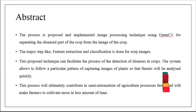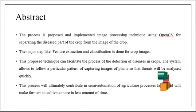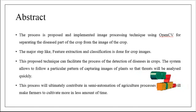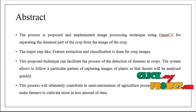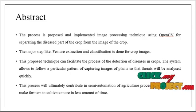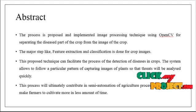We are going to discuss the abstract of the process. The process is proposed and implemented using digital image processing techniques with OpenCV for separating the disease part of the crop from the images. The disease part is extracted from the crop and the background is eliminated. Major steps like feature extraction and classification are done for the crop images to classify whether the input image is affected by the disease or not.